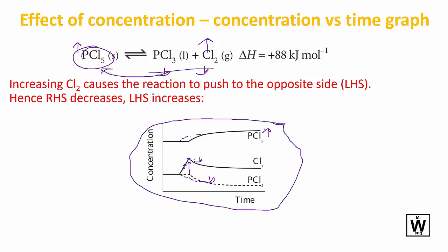There'll be many things to do with these sorts of graphs in equilibrium. They might ask you to draw it, might ask you to interpret it. And so increasing chlorine causes the reaction to push to the opposite side, left hand side. Hence right hand side decreases, left hand side increases.